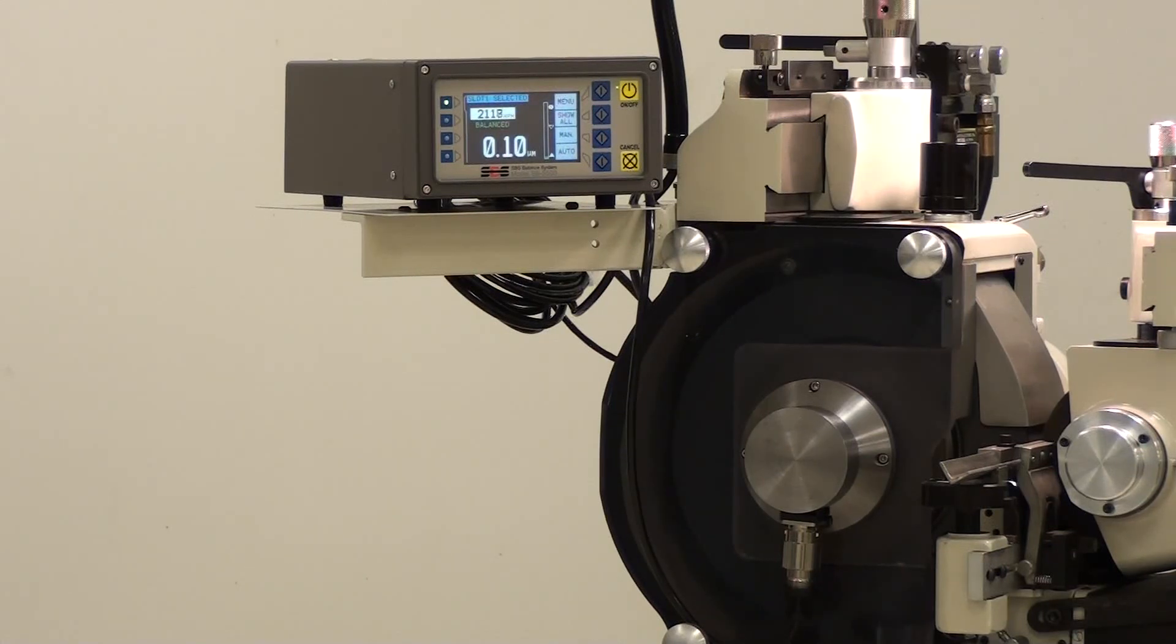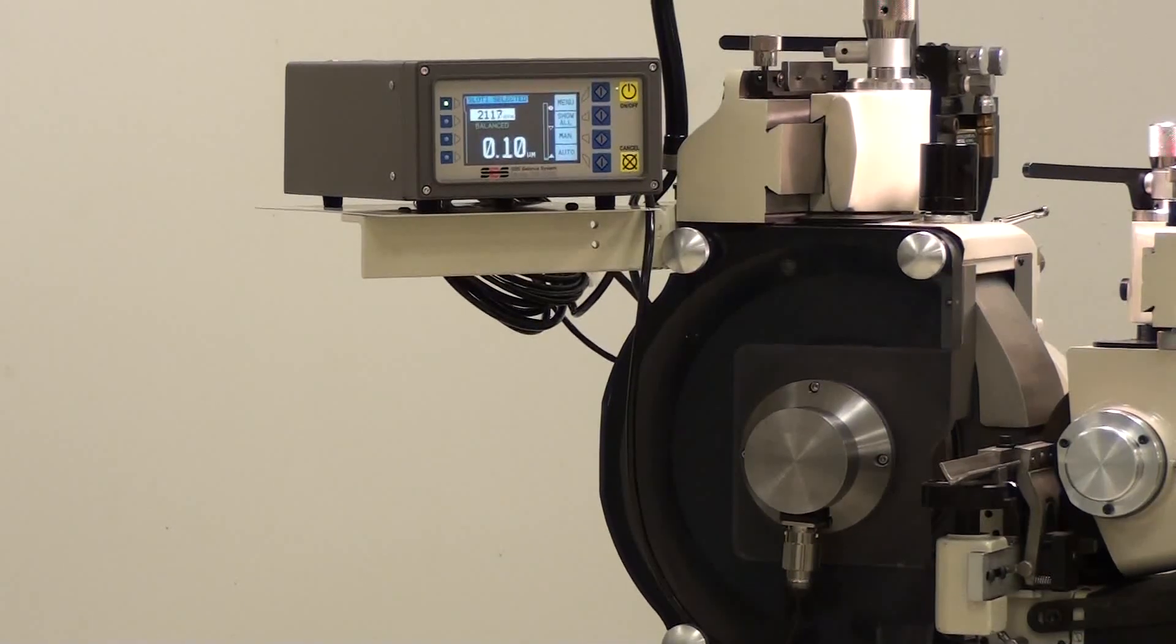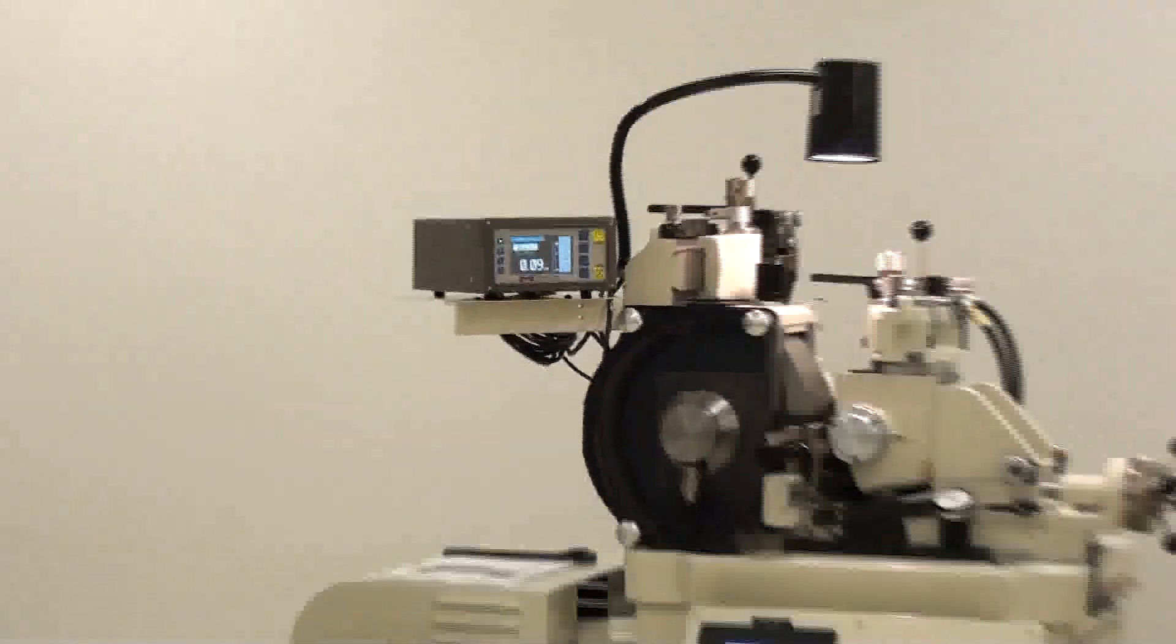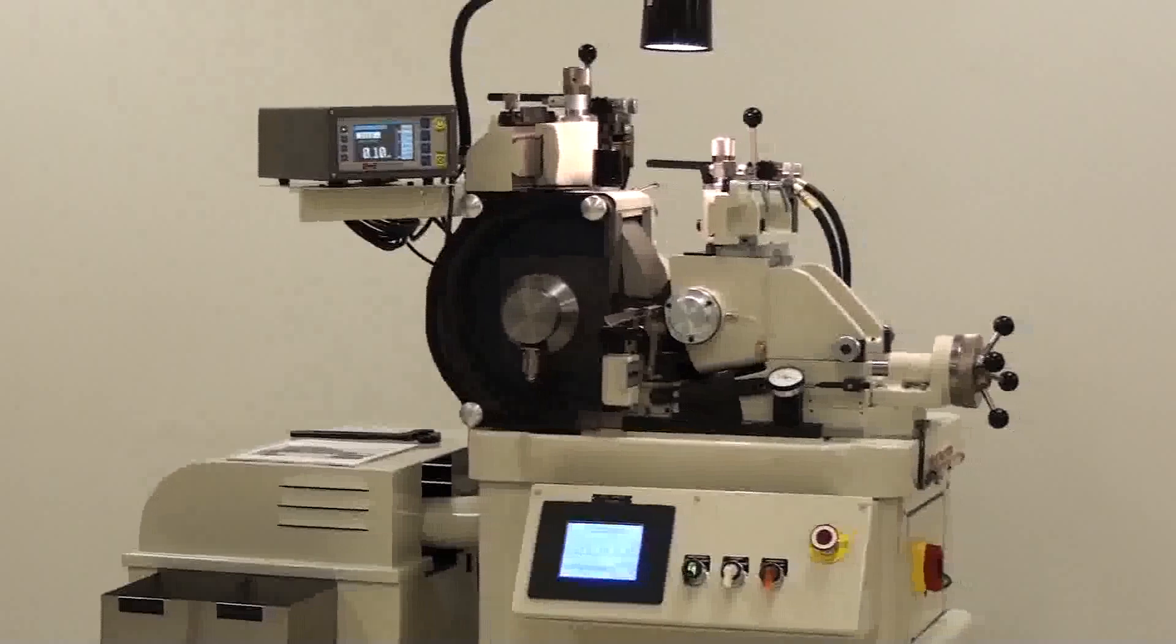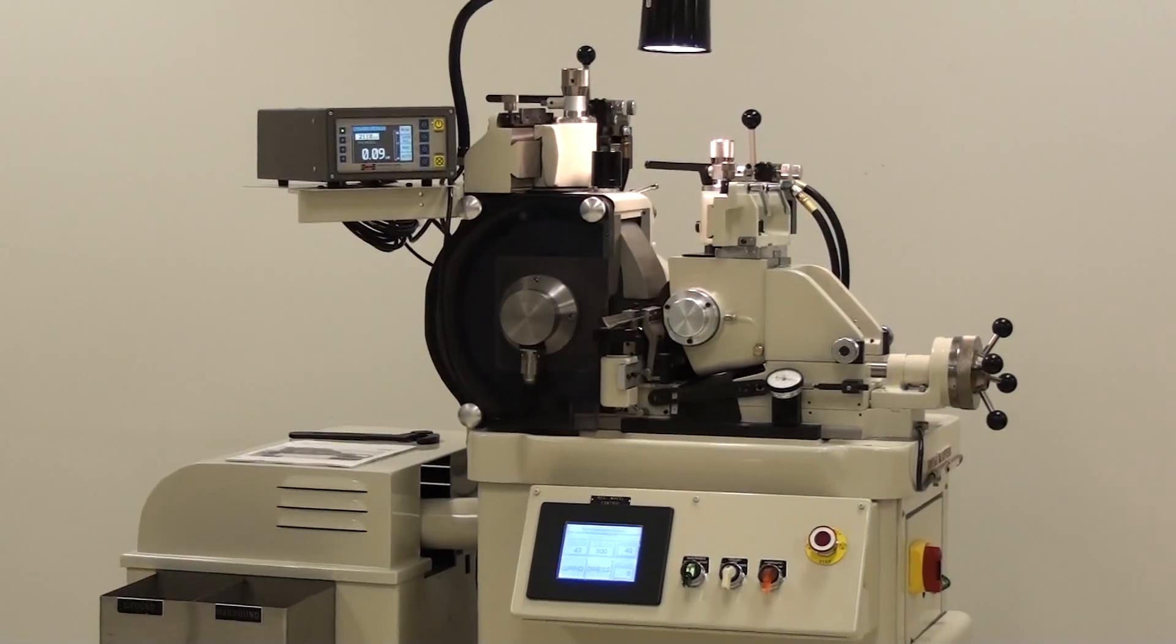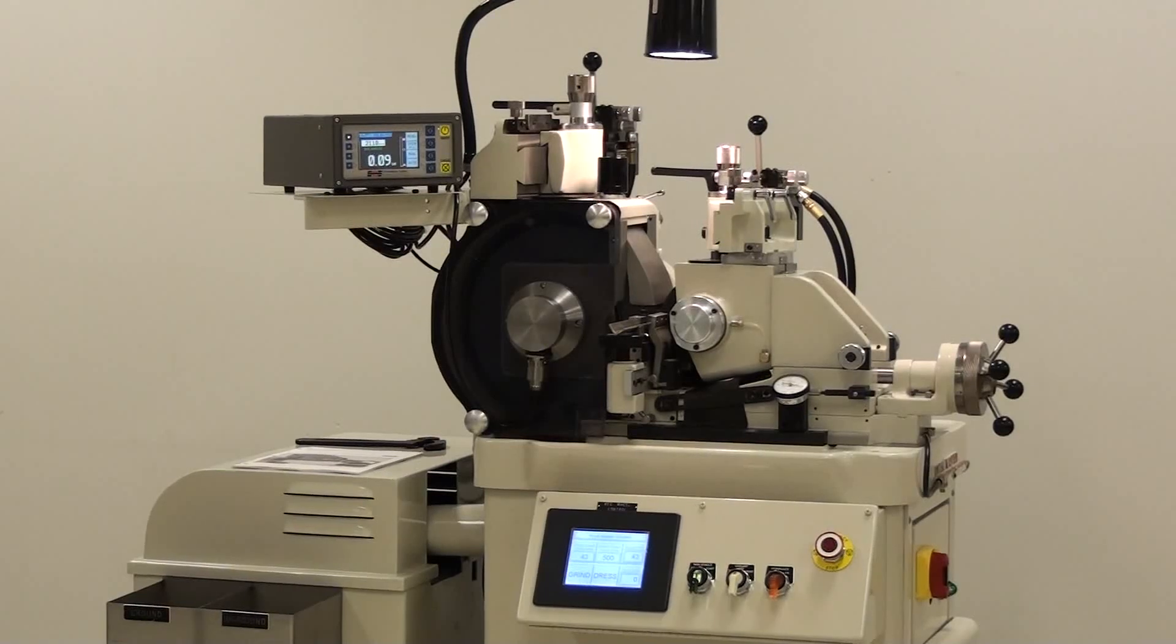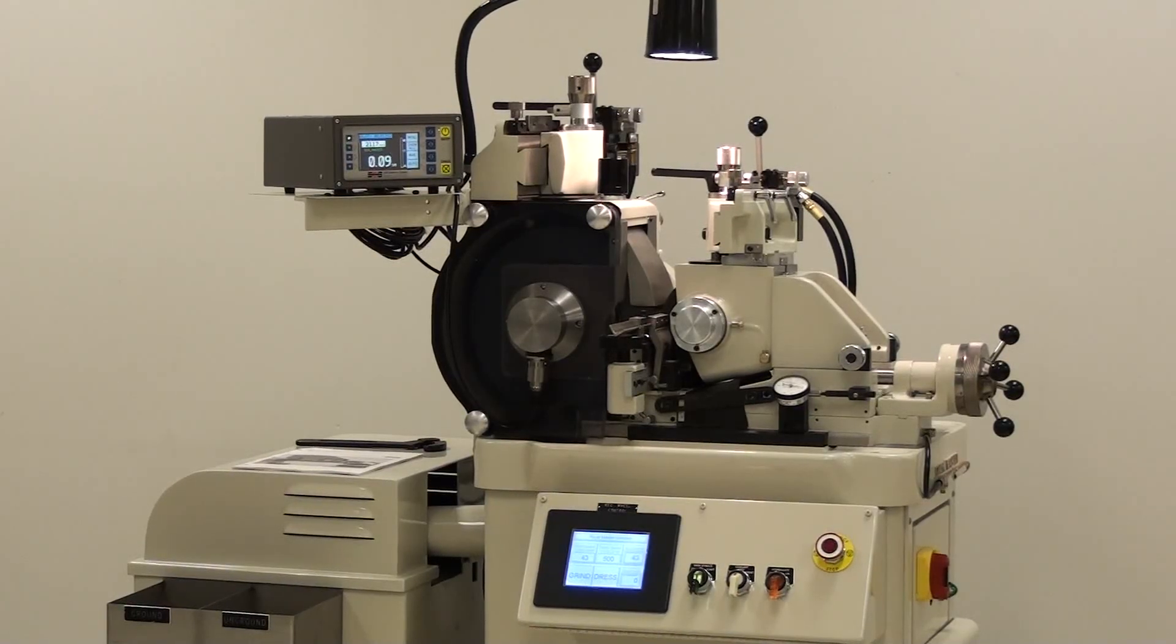With the SBS system, new grinding wheels are typically balanced in less than one minute. After a wheel is worn and dressed, the balance cycle is generally just a few seconds. Since all balancing is done at full operating RPM with the coolant on, the balance achieved is far superior to static balancing methods.